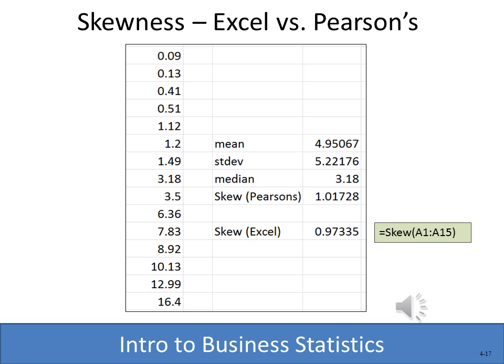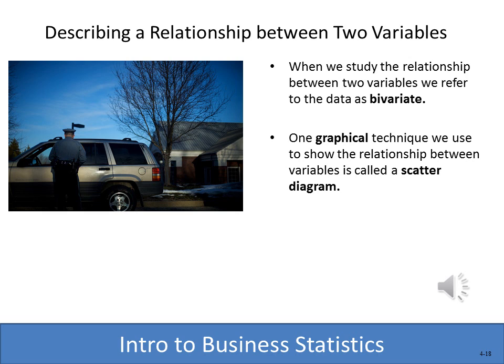In Excel we use the standard deviation, mean, and median functions, then manually compute Pearson's coefficient of skewness. Excel also has a SKEW function, which gives a slightly different value but still indicates positive skewness. The difference depends on whether you use Pearson's or Excel's version of the skewness formula.